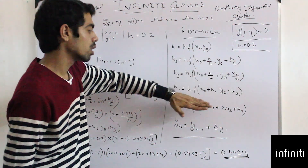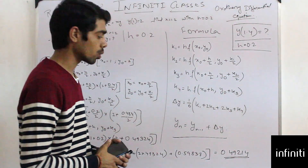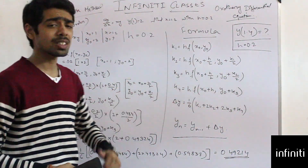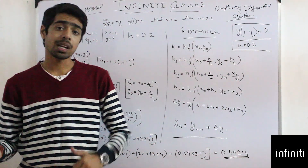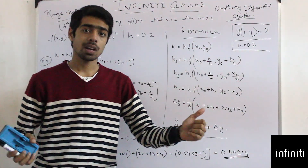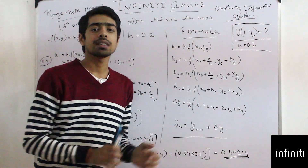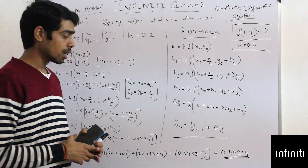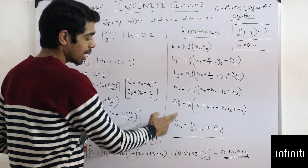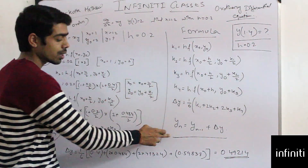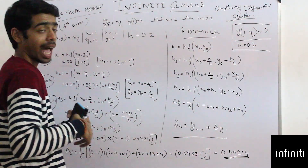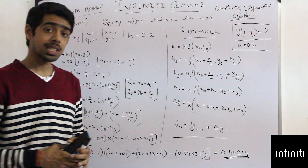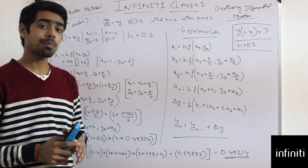Delta y is (1/6) · (k1 + 2k2 + 2k3 + k4). Then y_n equals y_(n-1) plus delta y, where y_(n-1) is the previous interval value. Here we have to find y(1.2), so the previous interval value is y(1) = 2.